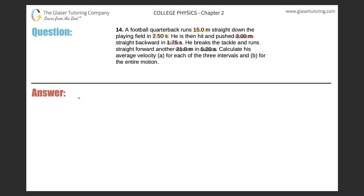The quarterback starts running straight down the field. In the first part he travels 15.0 meters, and it takes him 2.50 seconds — that's his displacement value. Then in the second part he's pushed 3 meters straight backwards. The distance here is 3.00 meters and the time it took to travel back this distance was 1.75 seconds.